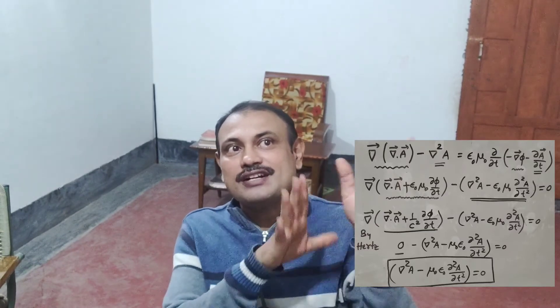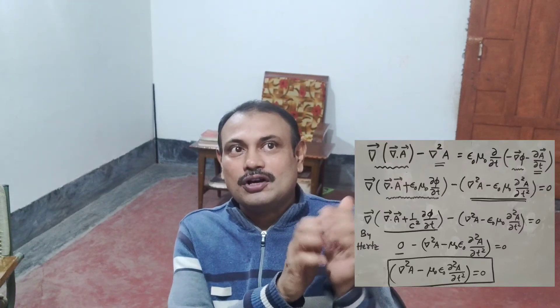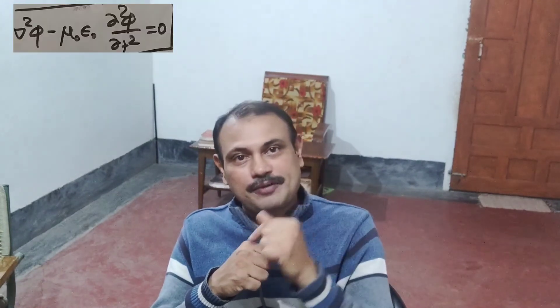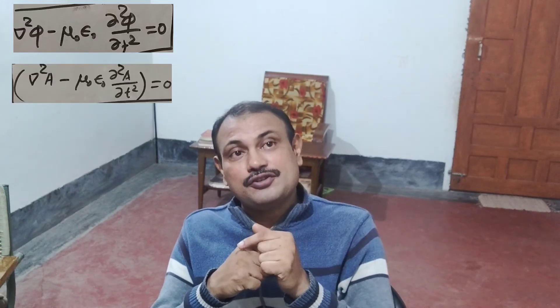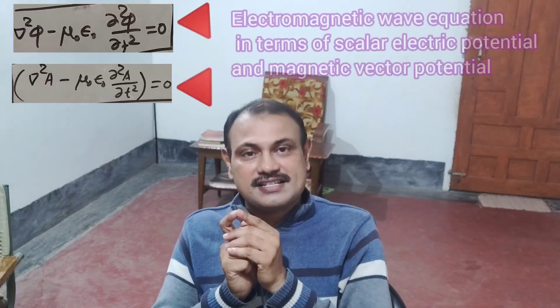What remains on the right-hand side gives us: grad squared A minus mu zero epsilon zero del squared A by delta t squared equals zero. We joined the first terms on left and right-hand sides, and similarly the second terms, yielding this final result. So the two expressions — grad squared phi minus mu zero epsilon zero del squared phi by delta t squared equals zero, and grad squared A minus mu zero epsilon zero del squared A by delta t squared equals zero — together are called the electromagnetic wave equations in terms of potentials, that is, electric scalar potentials and magnetic vector potentials. We will see more discussions regarding this in our subsequent class.